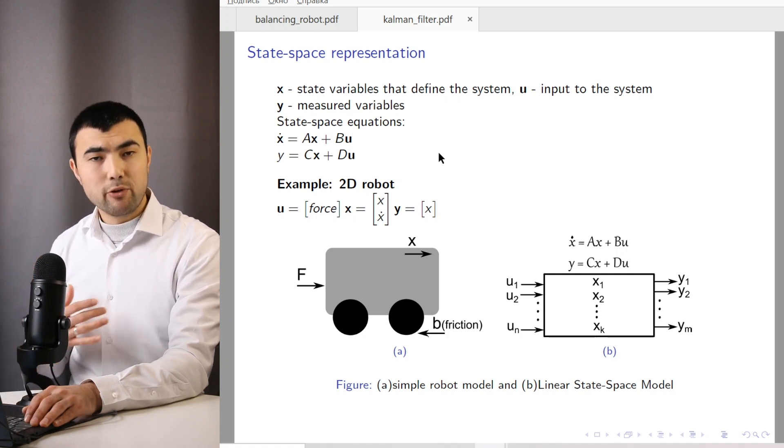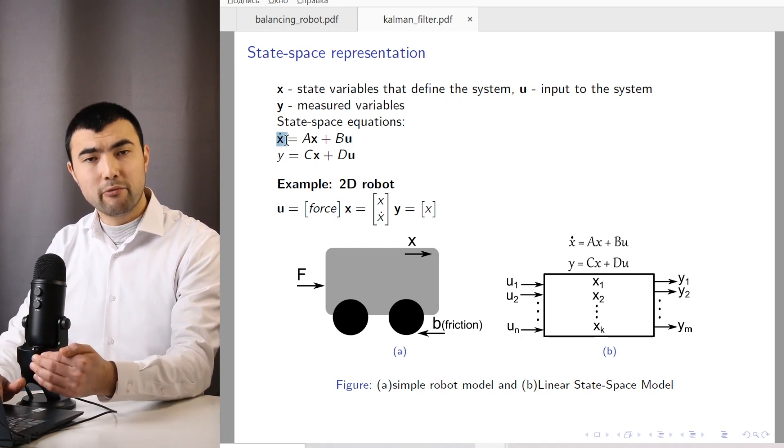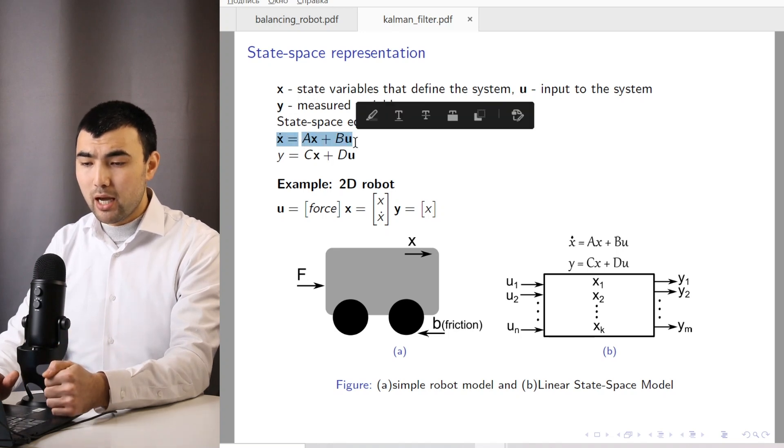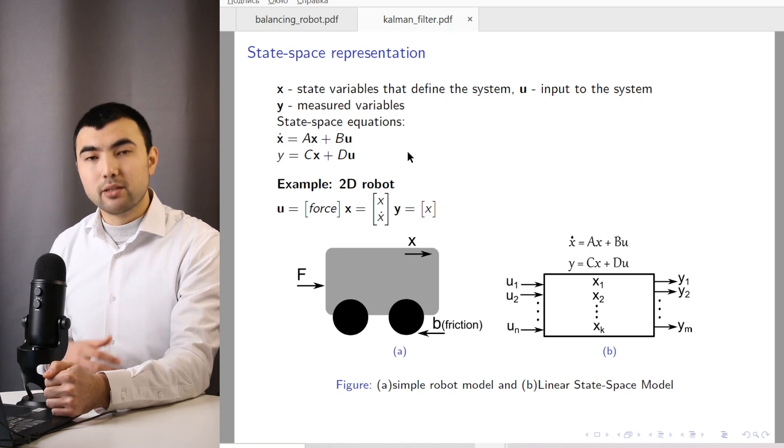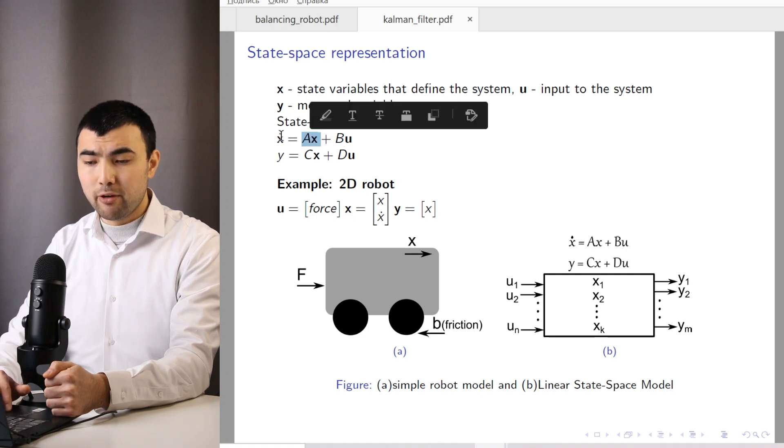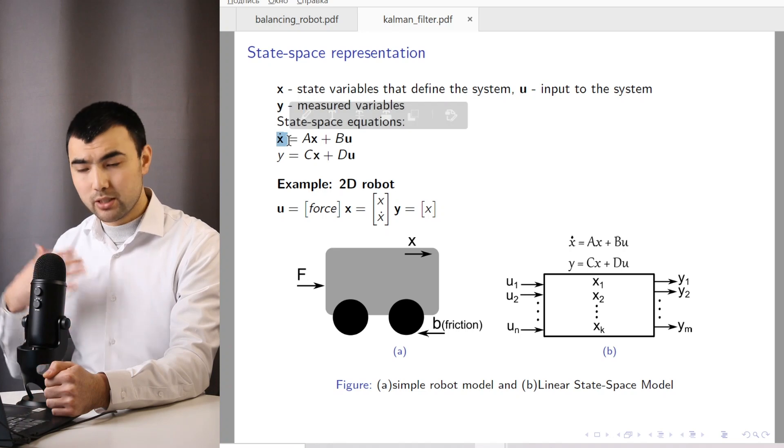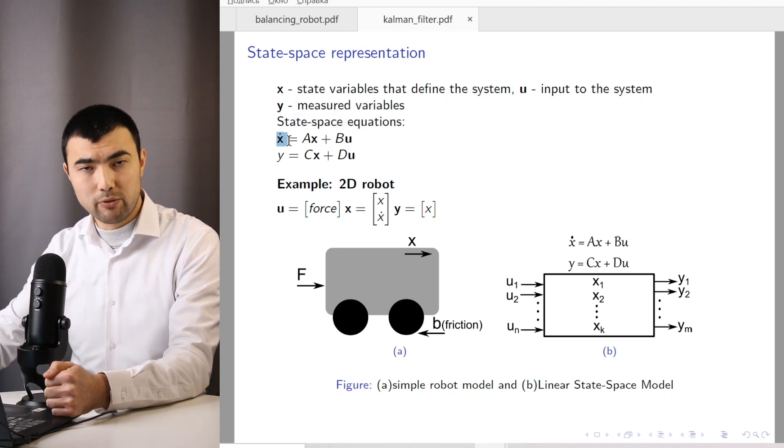So the first equation in state-space representation is X dot, the derivative of state variables equals AX plus BU. And here A and B are matrices. The meaning of this equation is to show how state variables and inputs affect the dynamics of the system, how the state variables will evolve in the future.